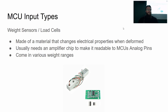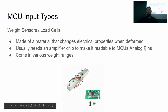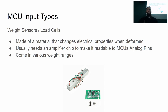Another type of input are weight sensors and load cells. These are made of a material that will change electrical properties when deformed — typically increasing or decreasing voltage when you change its shape. The typical use case involves buying a load cell as well as a compatible amplifier circuit that translates the very small voltage from deformation to the 0-to-5V or 0-to-3.3V range needed for the microcontroller. They come in various weight ranges, so read the datasheet — otherwise it may be useless if it's measuring micrograms when you need it to weigh a person.